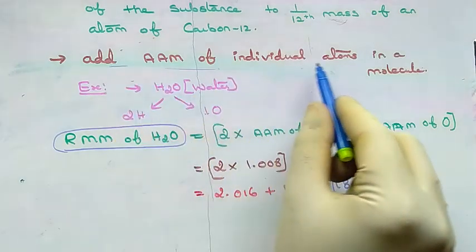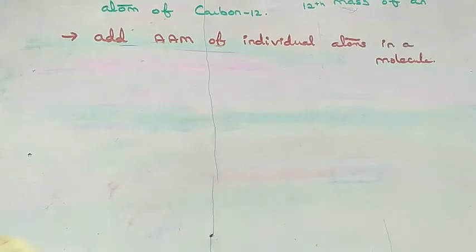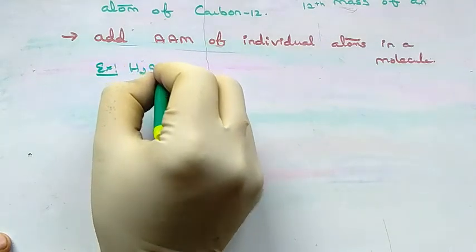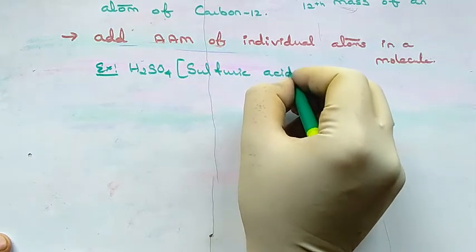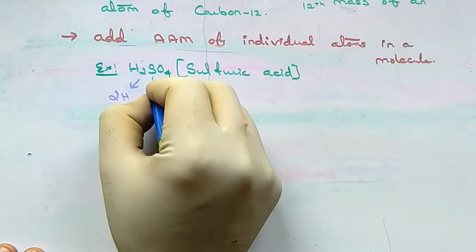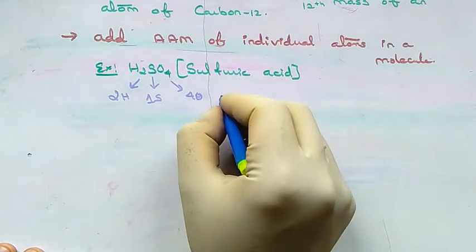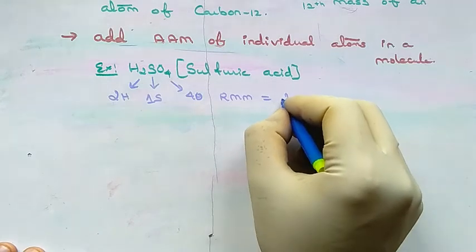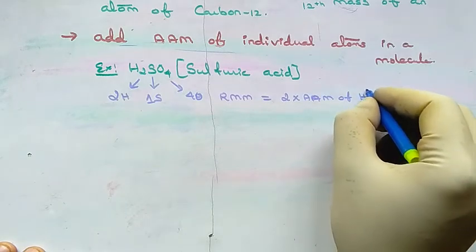This is how we calculate the relative molecular mass for each molecule. Next, we are going to calculate the relative molecular mass for H2SO4, that is sulfuric acid. In H2SO4 there are two hydrogens, one sulfur, and four oxygen atoms.